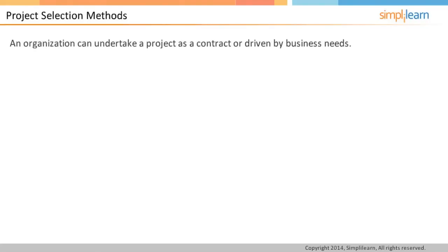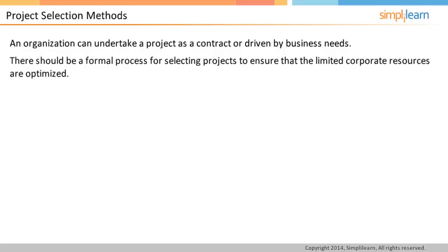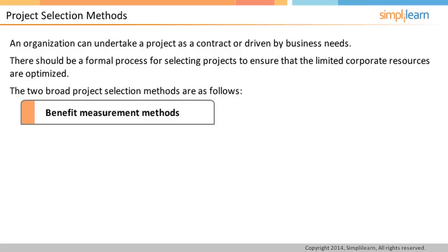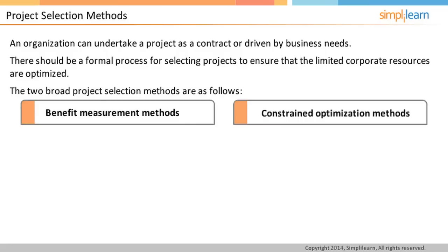An organization can undertake a project under contract with an external organization or take up a project driven by internal business needs. There should be a formal process of selecting projects in all organizations to ensure that it is making the best possible use of limited corporate resources. If the organization has an option to take up any one out of two projects, both using the same corporate resources, the organization would naturally select the one which is more profitable. There are two broad ways to select a project: the benefit measurement method, where one project is compared with other competing projects, and constrained optimization methods, which are based on mathematical models to optimize a goal such as maximizing operating profits.